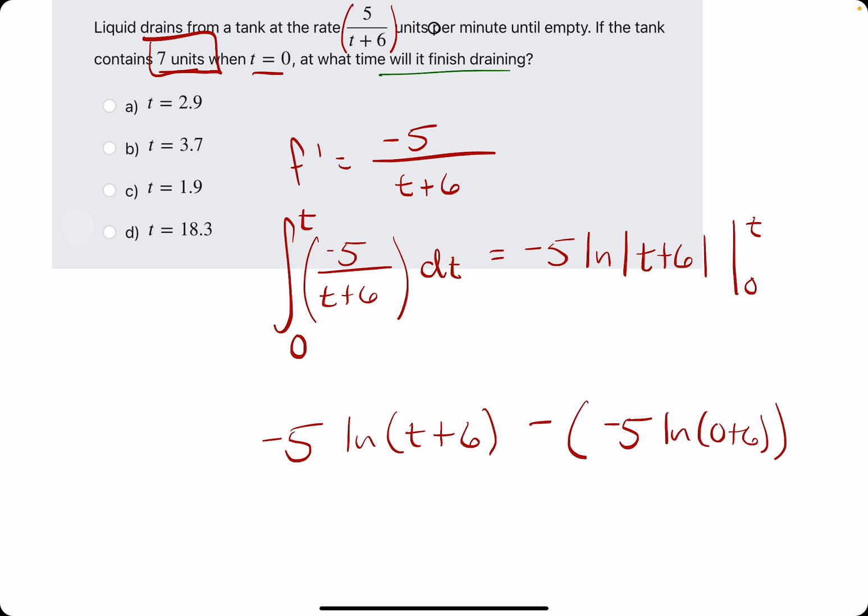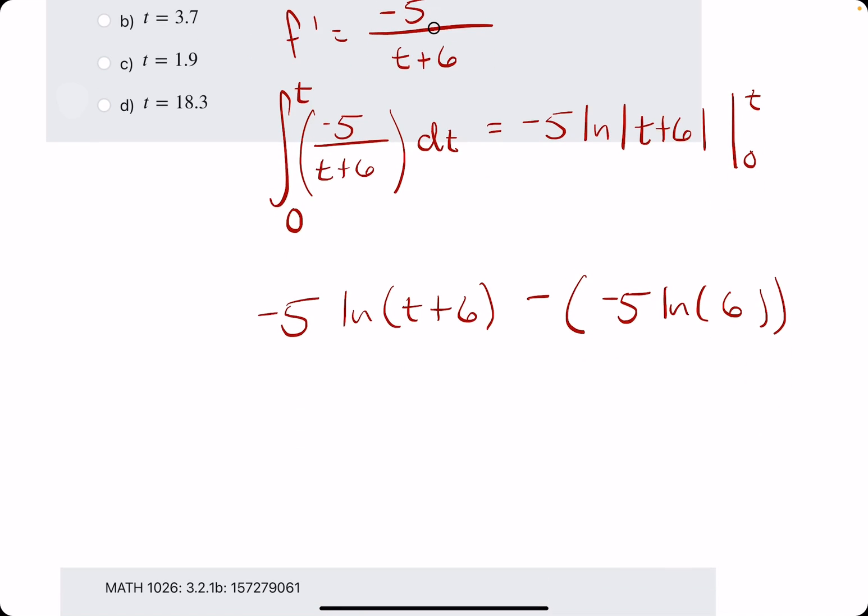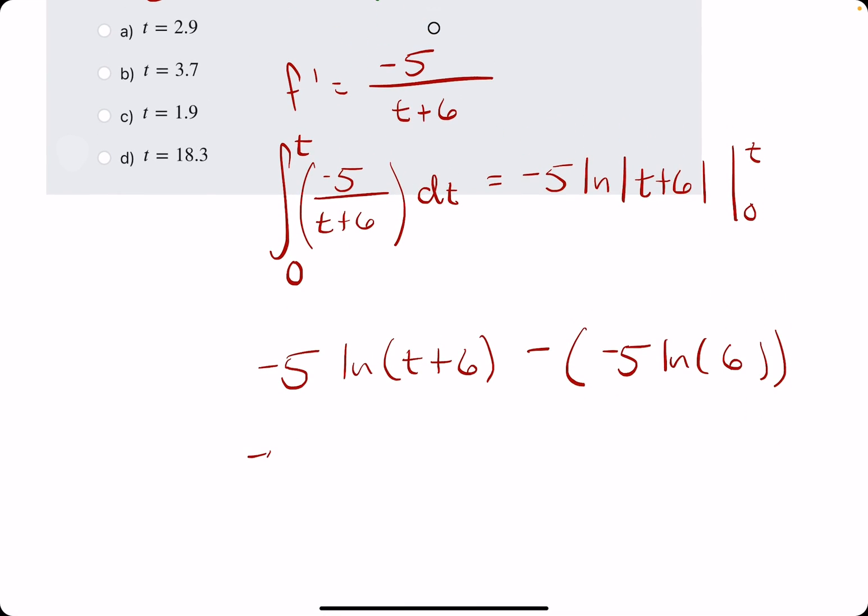When we plug in zero to t plus six, we get zero plus six, which is really just six. So all together we have negative five ln of t plus six plus five ln of six.